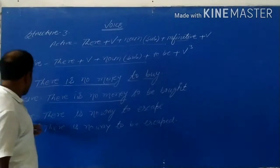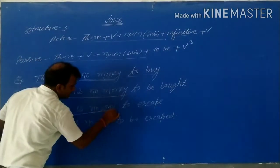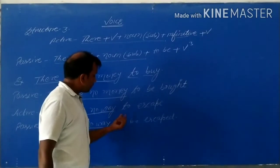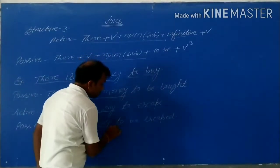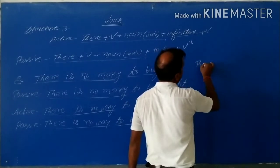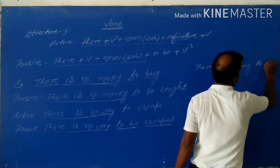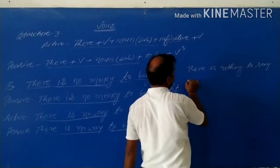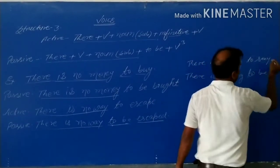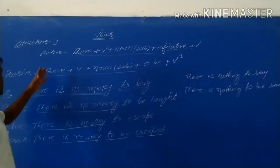Now, again, one example. There is no way to scale. There is no way to scale. We have to like these things as it is. There is no way. And just only we have to put be with to. Then, to plus be, to be scaled. Third form, scaled. Here, one more example. There is nothing to scale. Same thing is happening here. There is nothing to be scaled. So, it means this is the structure third.